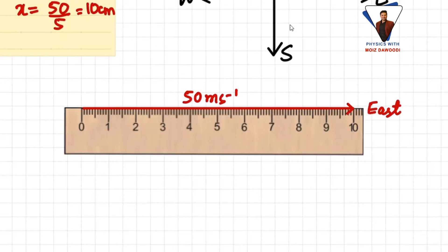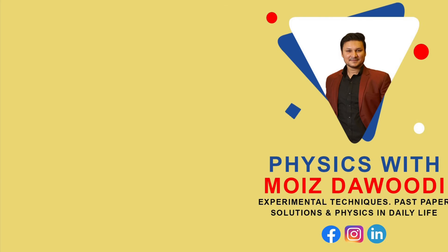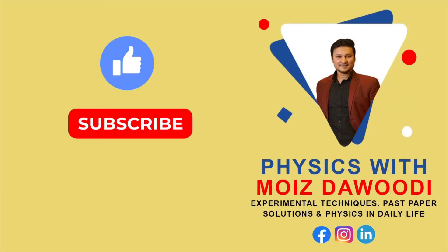I hope with these two examples you are clear on how to draw a vector: choose a sensible scale starting from unity (one centimeter equals something), ensure the scale is not too large or too small, draw your vector to scale in the given direction. If you found this helpful, don't forget to like the video, subscribe to the channel, and press the bell icon so you don't miss future videos. May God bless you, thank you.